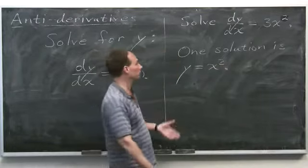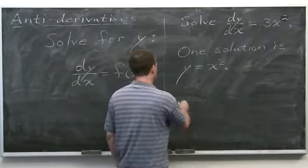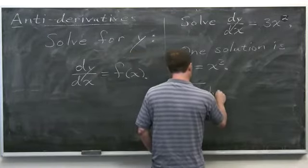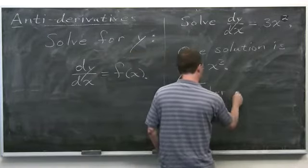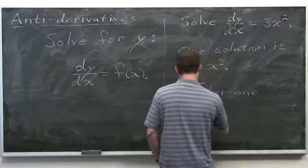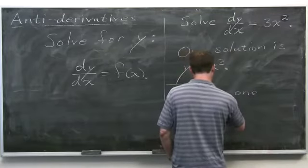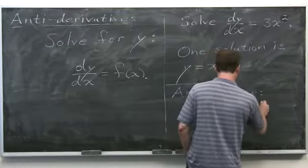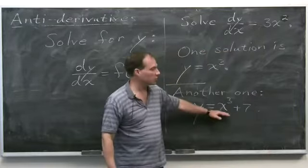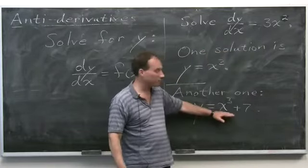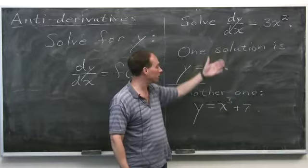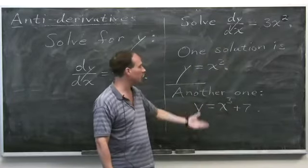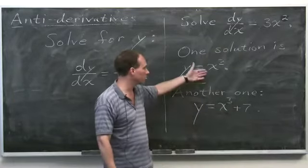Are there others? Sure. Another one is y equals x cubed plus 7, right? Because when you differentiate x cubed plus 7, the derivative of x cubed is 3x squared, and the derivative of 7 is 0. So here's another function whose derivative is 3x squared.